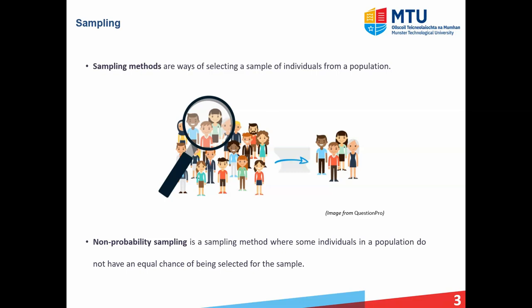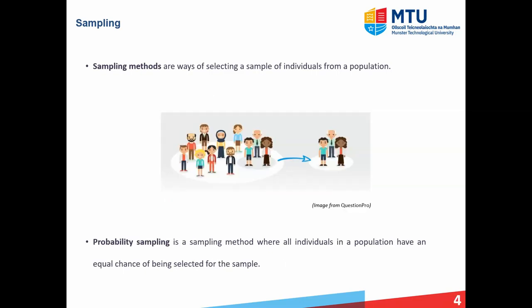Sampling methods are a way of selecting samples or subsets from a population. We sample because we're never going to be able to get information for the entire population of interest. There are two types of sampling methods: non-probability sampling and probability sampling. Non-probability sampling is a method where some individuals in a population do not have an equal chance of being selected for the sample. Probability sampling, on the other hand, is where all individuals have an equal chance of being selected.